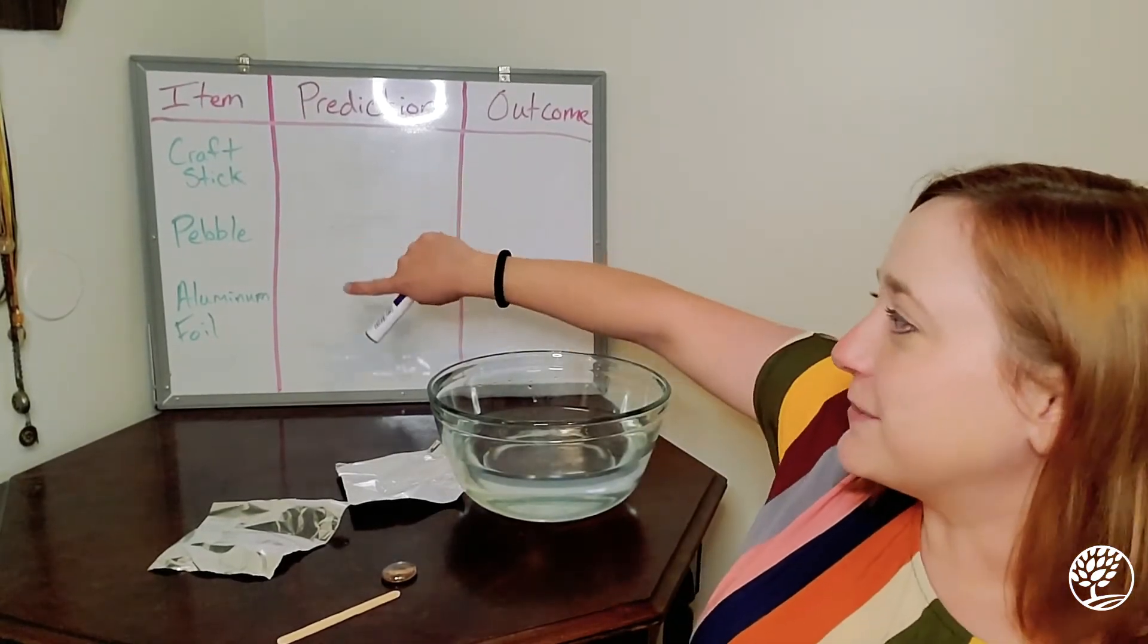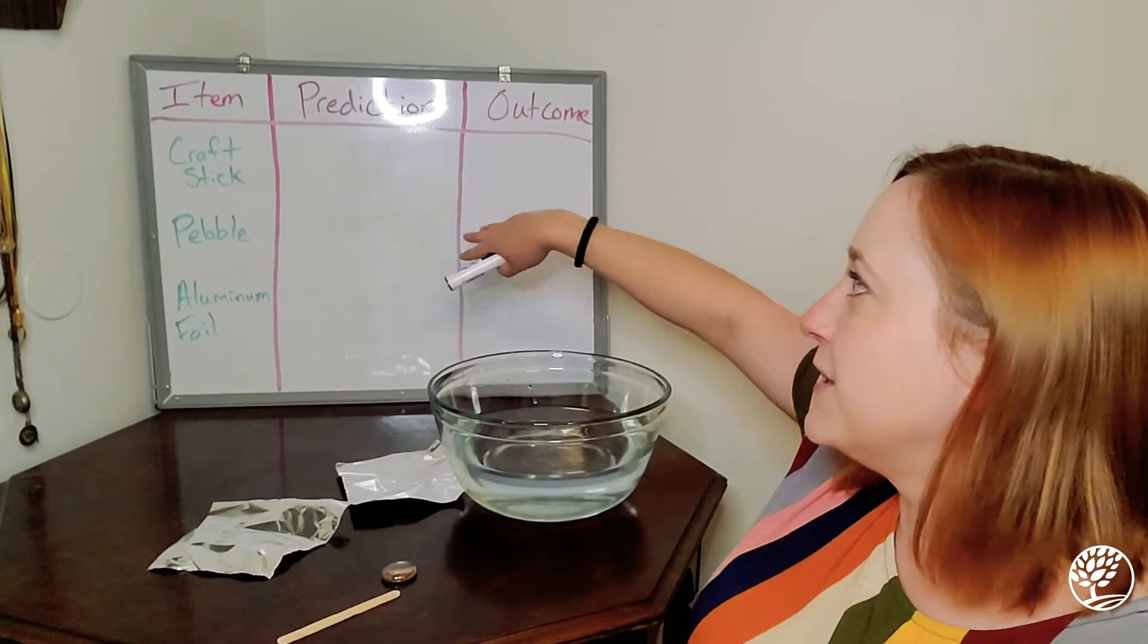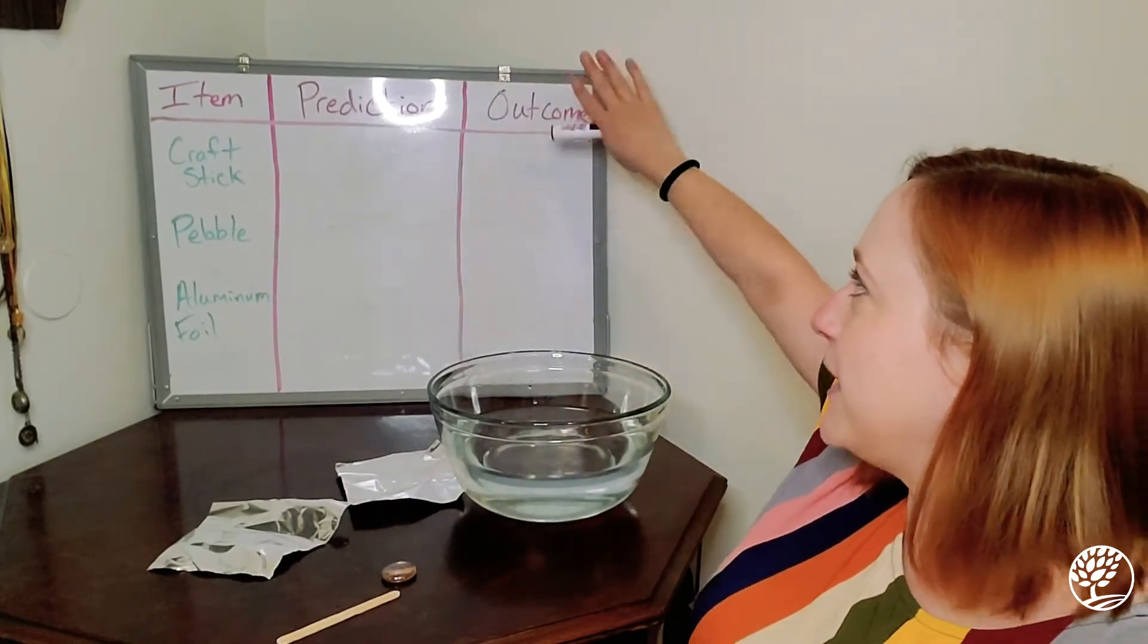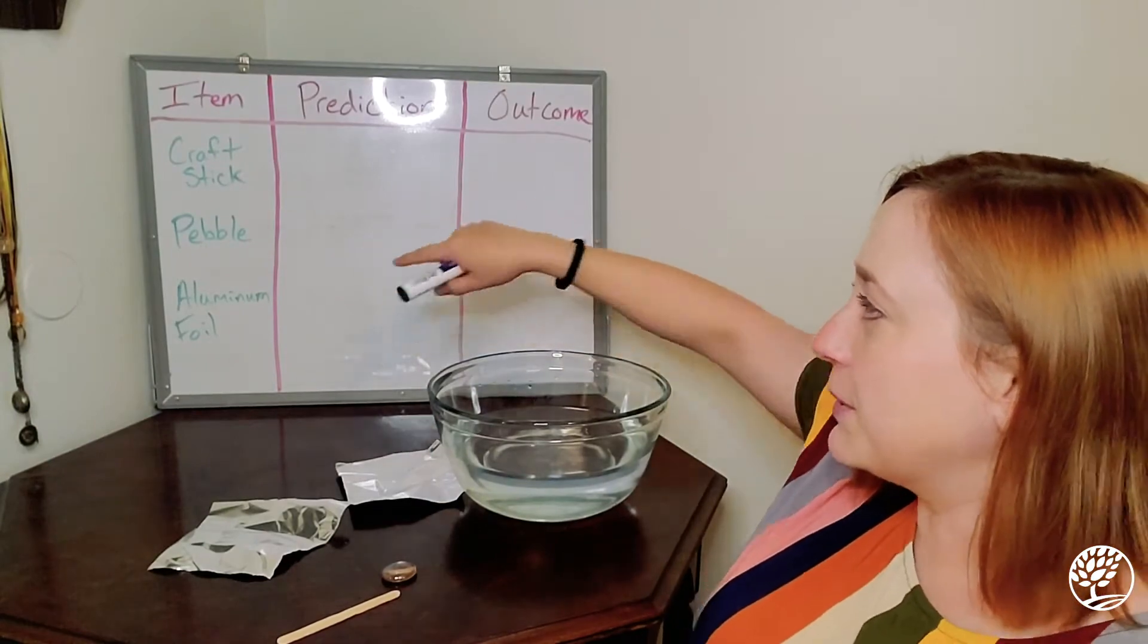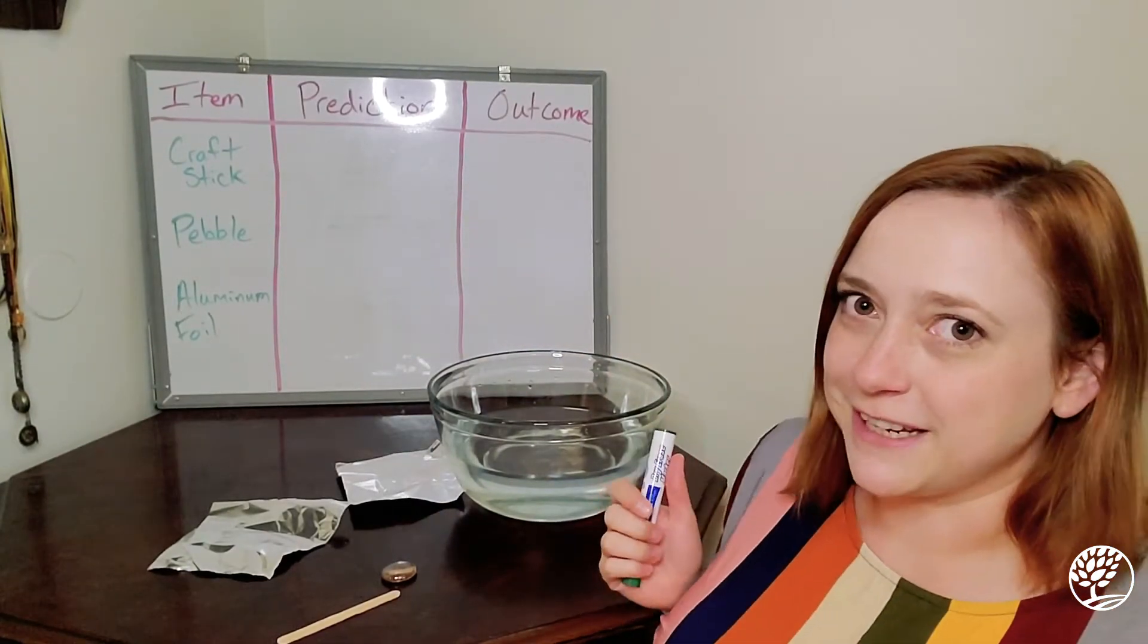So I have my three different items listed here on my chart. It's a very simple chart, just the item, my prediction, and the outcome. So I have craft stick, pebble, and aluminum foil.